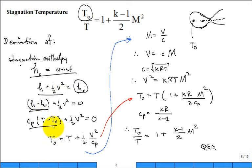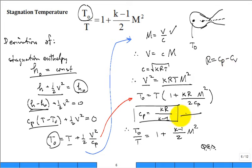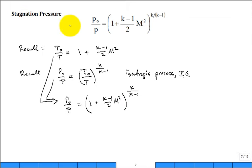Replace Δh with c_p ΔT to get T₀ = T + v²/(2c_p). Using the Mach number relation v² = kRT·M², and the property relation R = c_p − c_v, you arrive at the stagnation temperature equation. You also get a corresponding stagnation pressure equation from the same isentropic relations — once you have the temperature form, the pressure form follows by straightforward algebra.